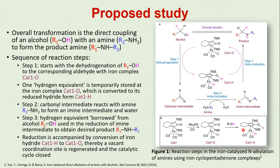The product of step 1 is the carbonyl intermediate. In step 2, the carbonyl intermediate reacts with the amine to form an imine intermediate and water. In step 3, the borrowed hydrogen from the alcohol is used in the reduction of the imine intermediate to give the desired amine product. In the reduction step, iron hydride catalyst 1-H is converted back to catalyst 1-open. The vacant coordination site is regenerated and the catalytic cycle is closed.